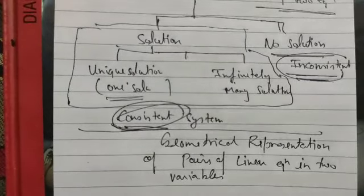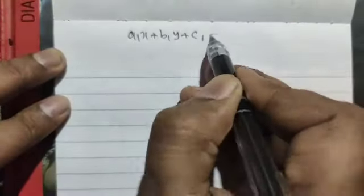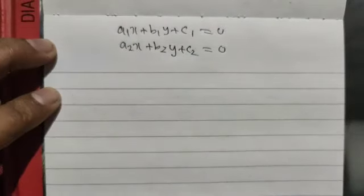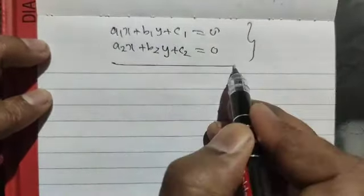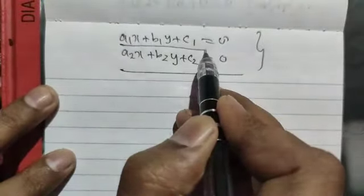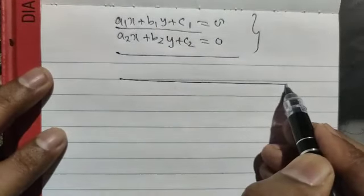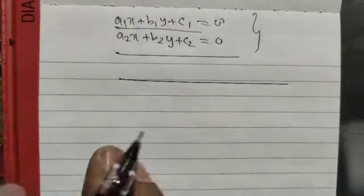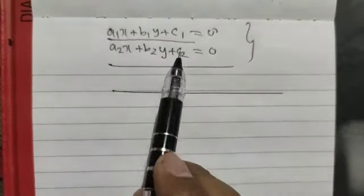Now we are going to discuss our next topic: geometrical representation of pairs of equations in two variables. Consider we have two equations: A1X + B1Y + C1 = 0 and A2X + B2Y + C2 = 0. All of you are aware about drawing the graphs of these equations. In class 9 we have seen that any linear equation geometrically represents a straight line. So these two equations are also going to represent straight lines in the plane.